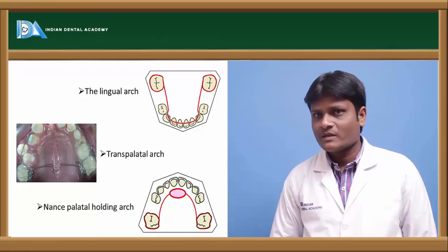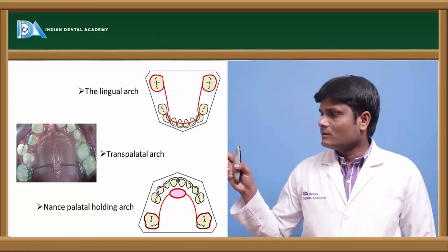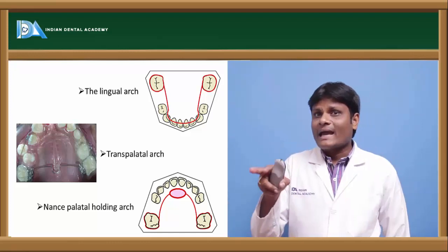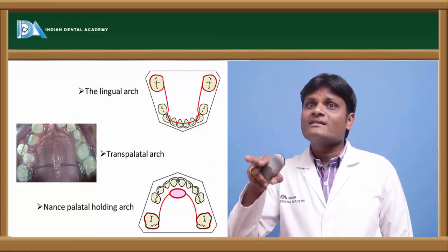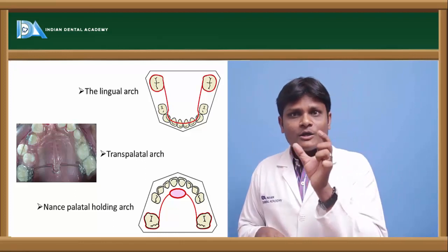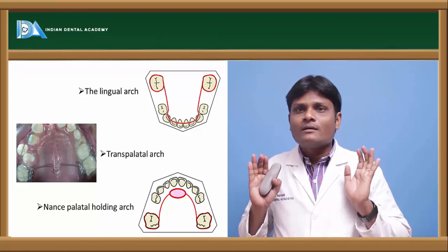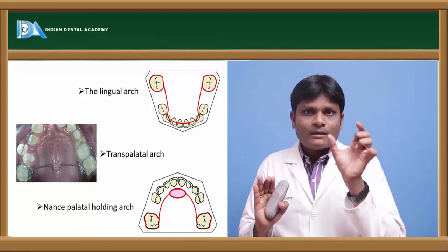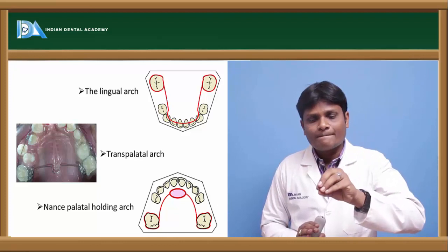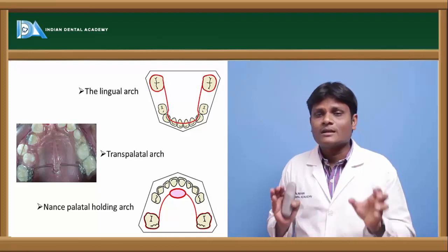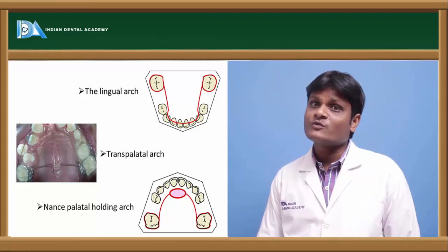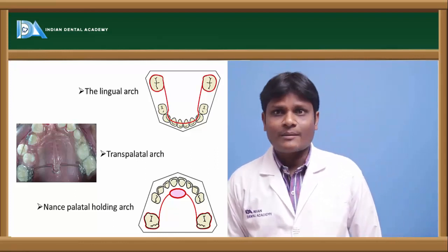The lingual arch and transpalatal arch are the types of fixed space maintainers that inhibit lateral jaw growth, as they connect the left side of the arch with the right side. Another type is the Nance palatal holding arch — bands are placed on first molars on both sides, and a wire component carries an acrylic button in the region of the anterior hard palate (rugae area). This acrylic button presses against the palate, providing orthopedic support that prevents mesial migration of the molars even under functional forces.